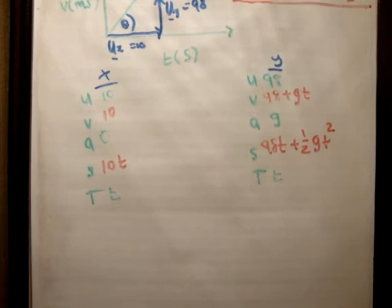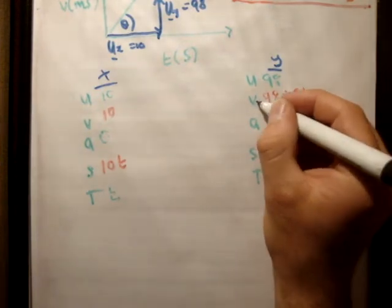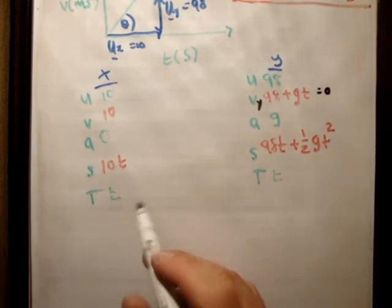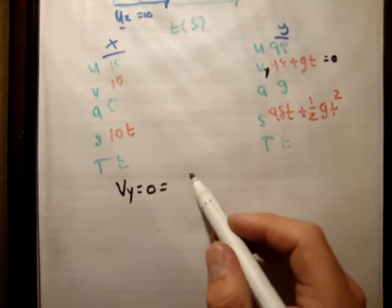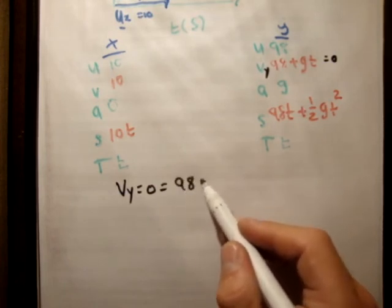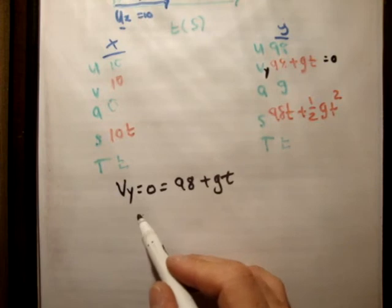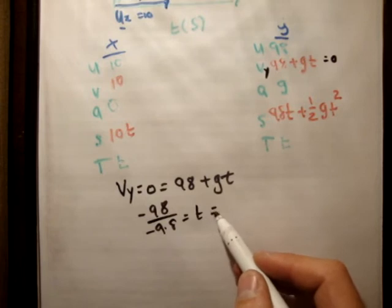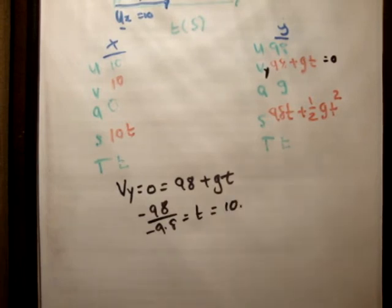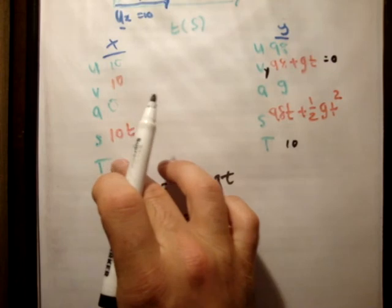We're asked to find the time when it reaches its maximum height above the plane. And once again, remember, when it's reached its maximum height above the plane, it has come to rest, and therefore, v sub y is equal to 0. So we have v sub y is equal to 0, is equal to 98, plus gt. So therefore, minus 98 over minus 9.8 is equal to t is equal to 10 seconds. So after 10 seconds, it's come to its maximum height above the plane.